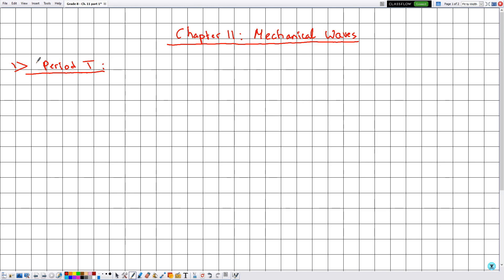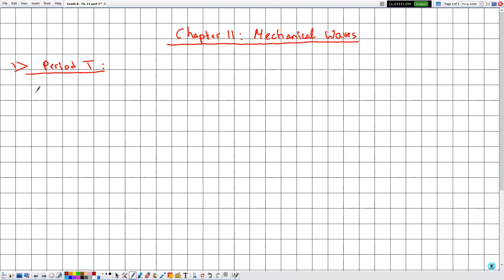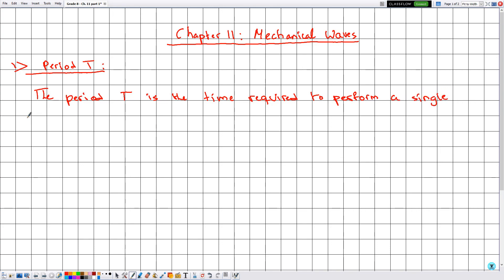In section number one, we will define what is meant by the period, having the symbol T. So the period T is the time required to perform a single vibration — or another word for vibration — oscillation.